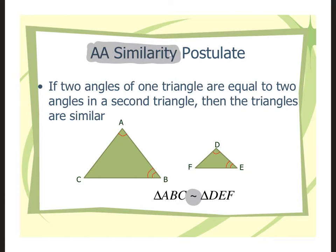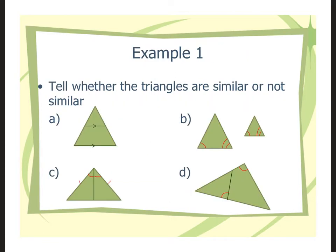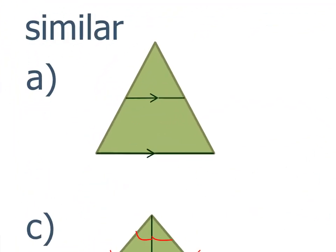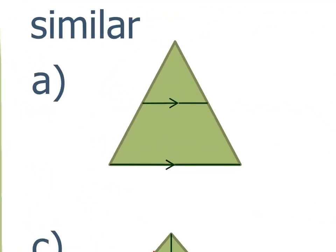Now we'll tell whether triangles are similar or not — just yes or no, one way to prove them. For example A, the only thing marked is those little arrows. If they're parallel, think of these as parallel lines with two transversals. If I put angle 1 here and angle 2 here, what's the relationship between those two angles? They're corresponding.